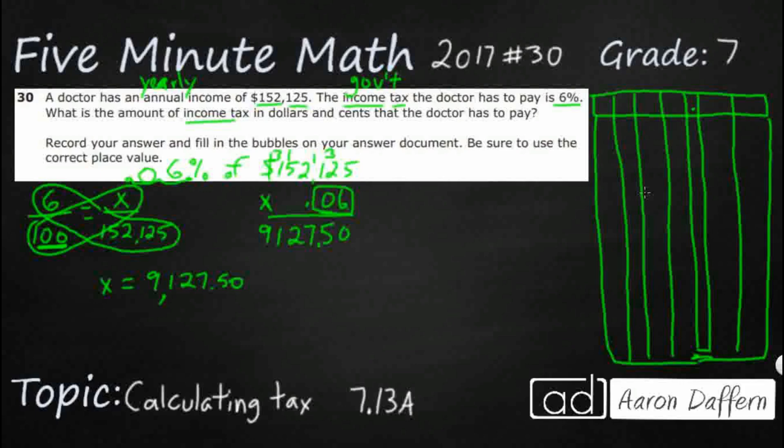And so we're going to need every single one of these. So we need $9,127.50. Now, we don't really need that zero. We can bubble it in without the zero if we want to, but just make sure we bubble everything in and we're good.